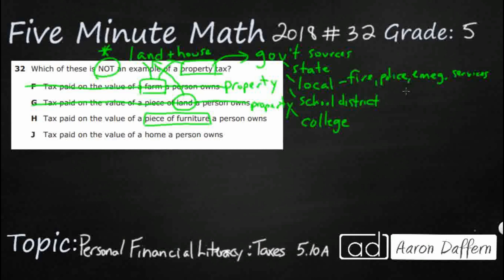J, the tax paid on the value of a home. There we go, there's your home. So that's property. So no, our answer here is H, because that is not property. That's just something inside your house.